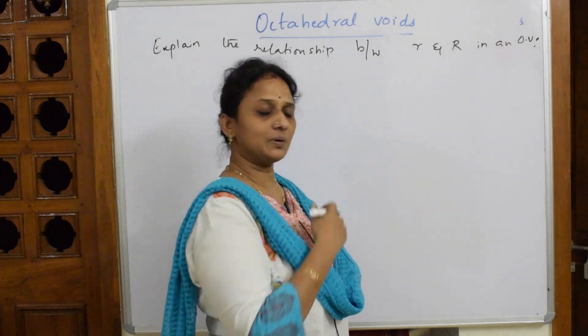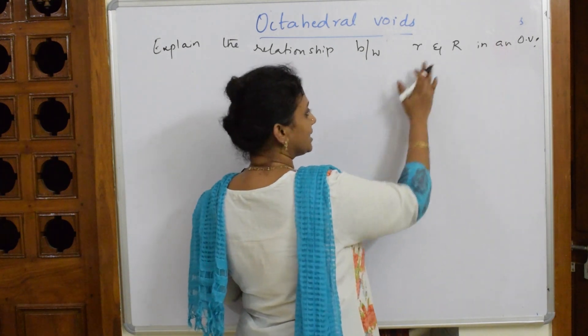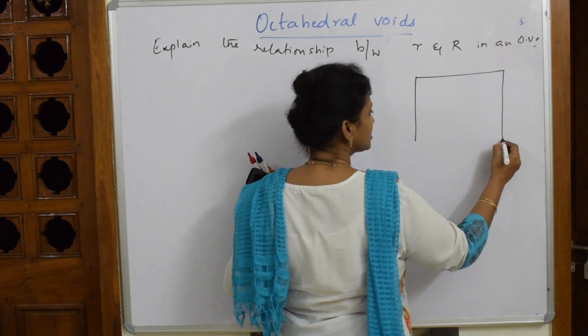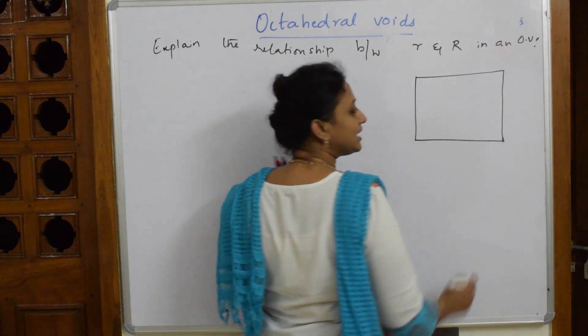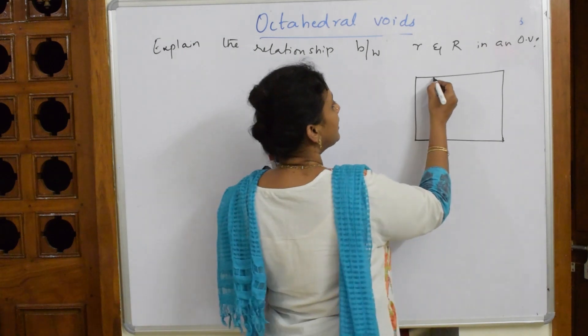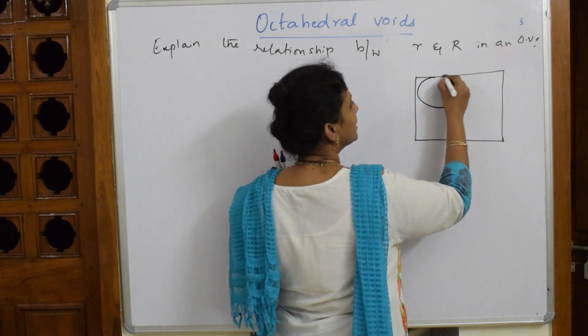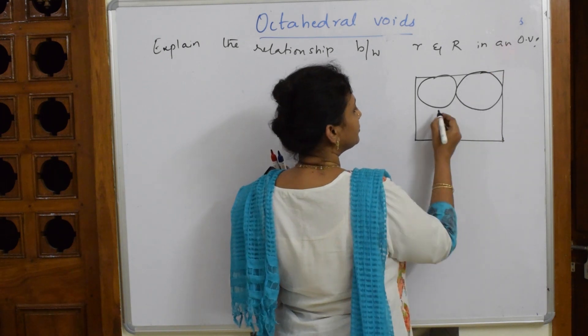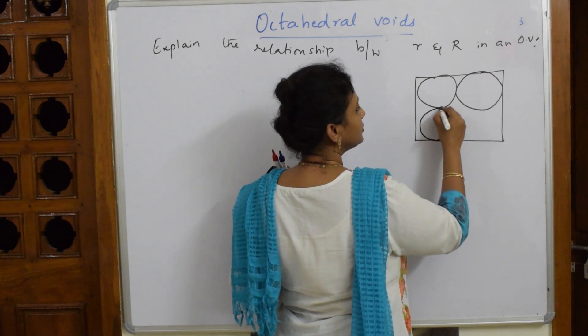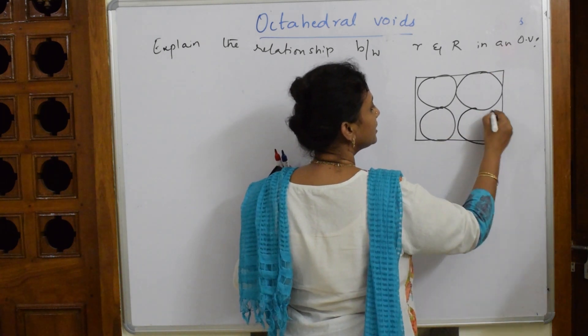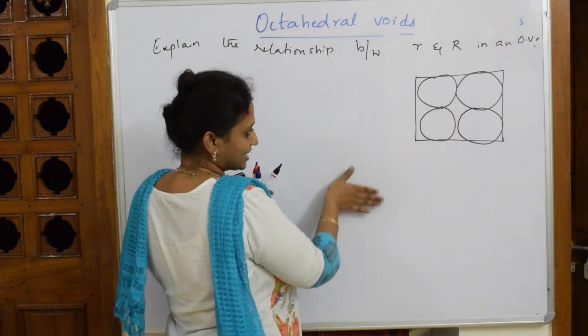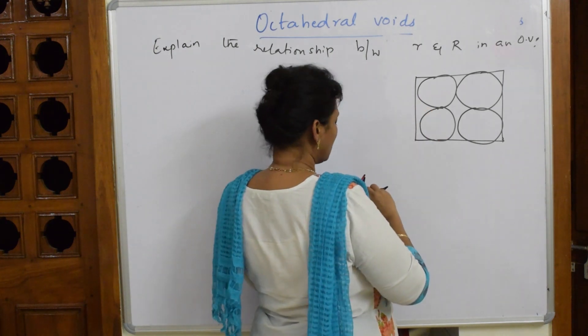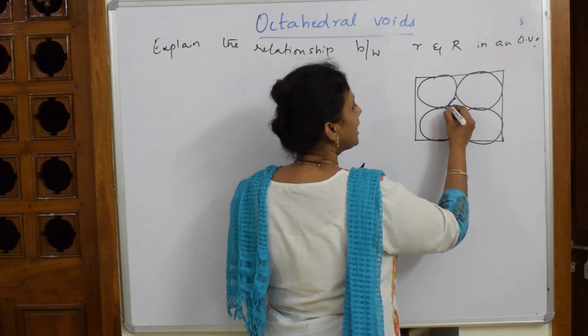First, I've shown you how they are arranged. Now I'm going to take a segment of this octahedral void in this plane just to make it simpler. In the segment I have four atoms attached: one, two, three, and four. In between this I just picked up that one section, and I'm showing you two in this dimension.